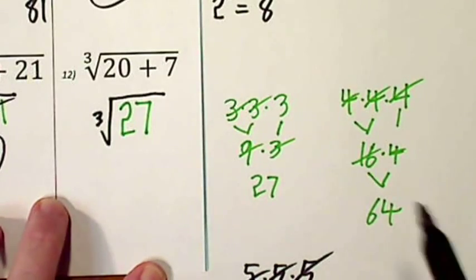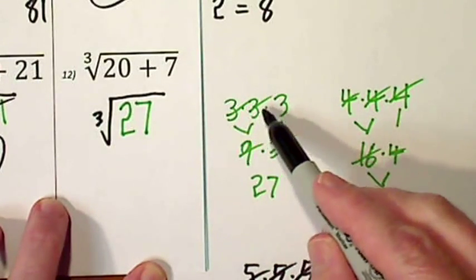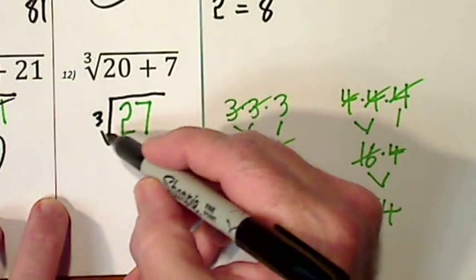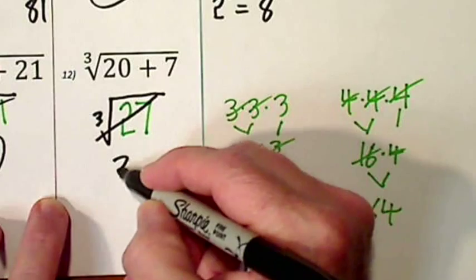So I still have to find the cube root of 27. And a little bit earlier in our work, we found that 3 times 3 times 3 gives us 27. So the cube root of 27 is 3.